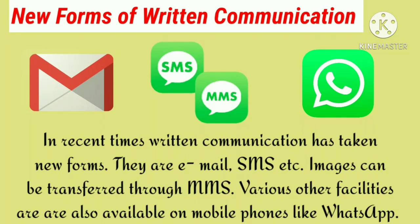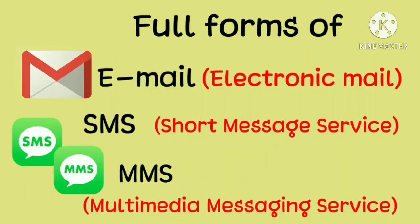New forms of written communication: as science and technology progressed, new forms of written communication emerged. For example, email — you can send a written message to someone via phone or computer. SMS — short message service — you can send that via phone too. MMS — multimedia message service — through which you can transfer pictures to others. Mobile phones also have facilities like WhatsApp, where you can make WhatsApp calls, video calls, voice calls, send voice messages, text messages, and even pay money through WhatsApp.